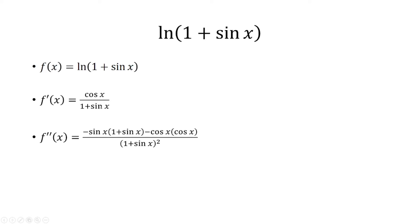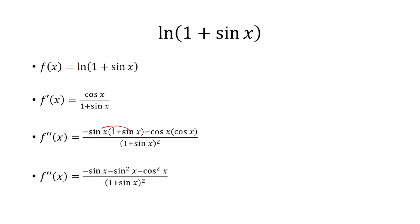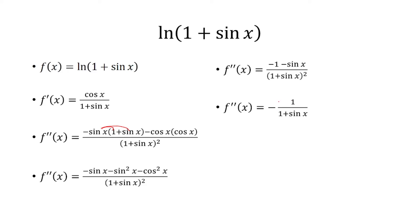The second derivative is found by taking the first derivative and applying the quotient rule. We take the derivative of cosine, which is negative sine, times the bottom, minus the derivative of the bottom, which is cosine, times the top, over the bottom squared. Simplifying by distributing, we use the identity sine squared plus cosine squared equals 1, so negative sine squared minus cosine squared equals negative 1. Factoring out a negative, the (1 + sin x) cancels with the bottom, giving us negative 1 over (1 + sin x).